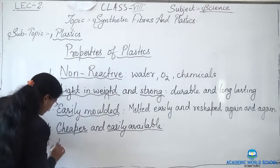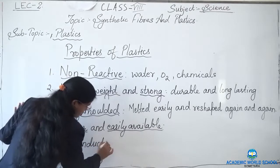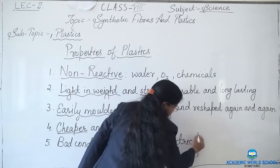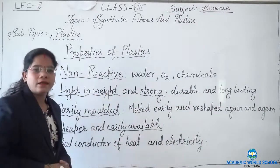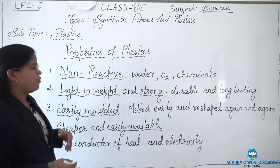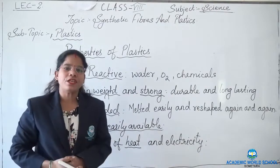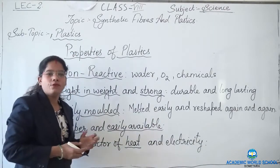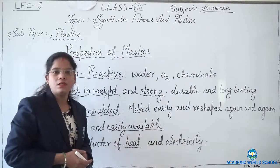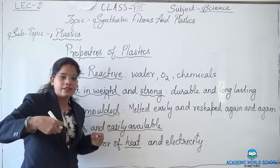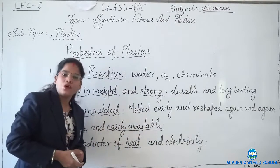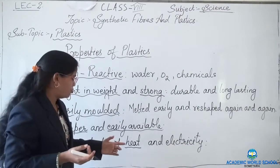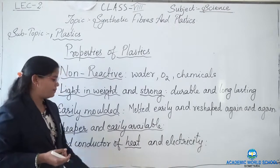The fifth property is that plastics are bad conductors of heat and electricity. Plastics are bad conductors of heat, and this is a very good property of plastic. Due to this property, many cooking utensils have handles made up of plastics because they are bad conductors. They do not get hot after cooking for a long time — especially those pressure cookers and non-stick cookware. The handles made of black material on those are a kind of plastic, and because plastics are bad conductors of heat, they do not get hot, making it easy for us to handle those cooking utensils.